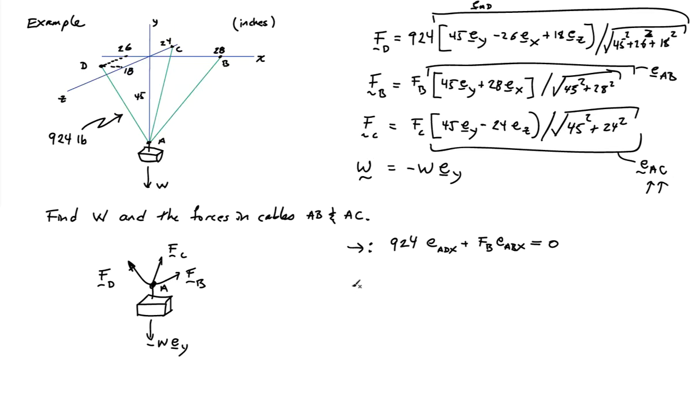If I sum the forces in the Z direction, I'll have 924 EADZ plus FC EACZ, which also has to equal zero. And if I sum the forces in the Y direction, I'll have 924 EADY plus FC EACY plus FB EABY minus W equals zero.